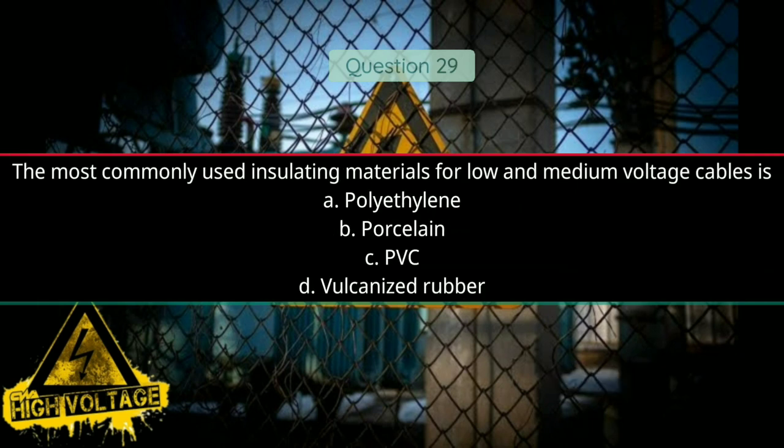Question number twenty-nine: The most commonly used insulating material for low and medium voltage cables is — Option A: polyethylene, Option B: porcelain, Option C: PVC, and Option D: vulcanized rubber. Correct answer will be C, PVC.